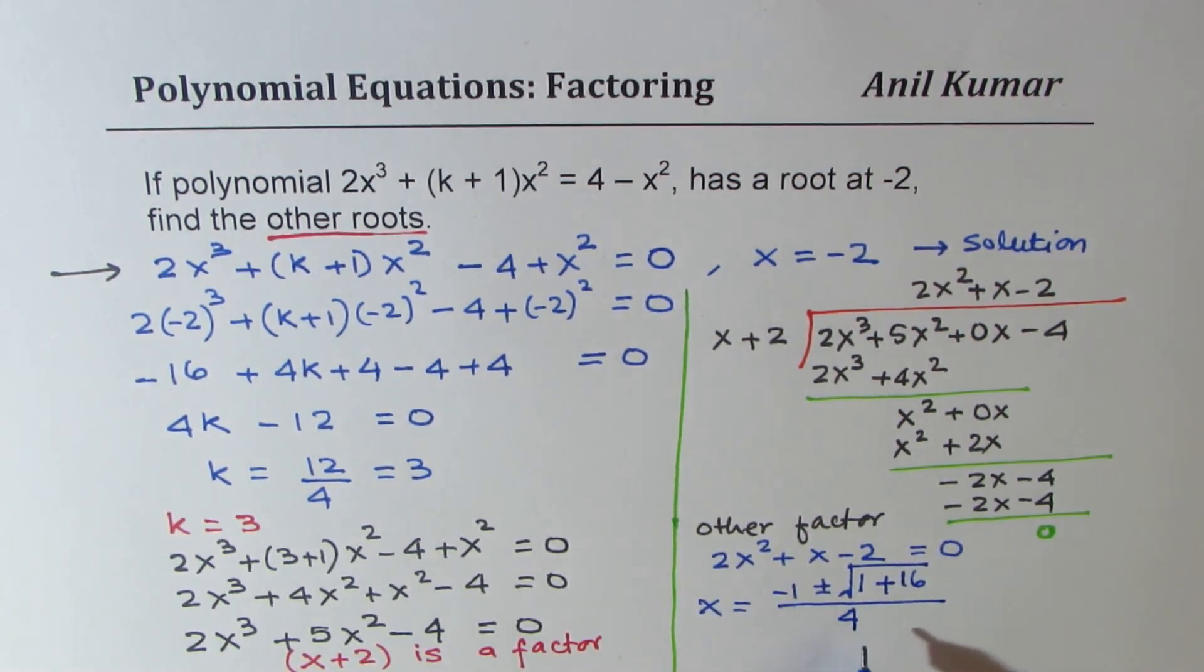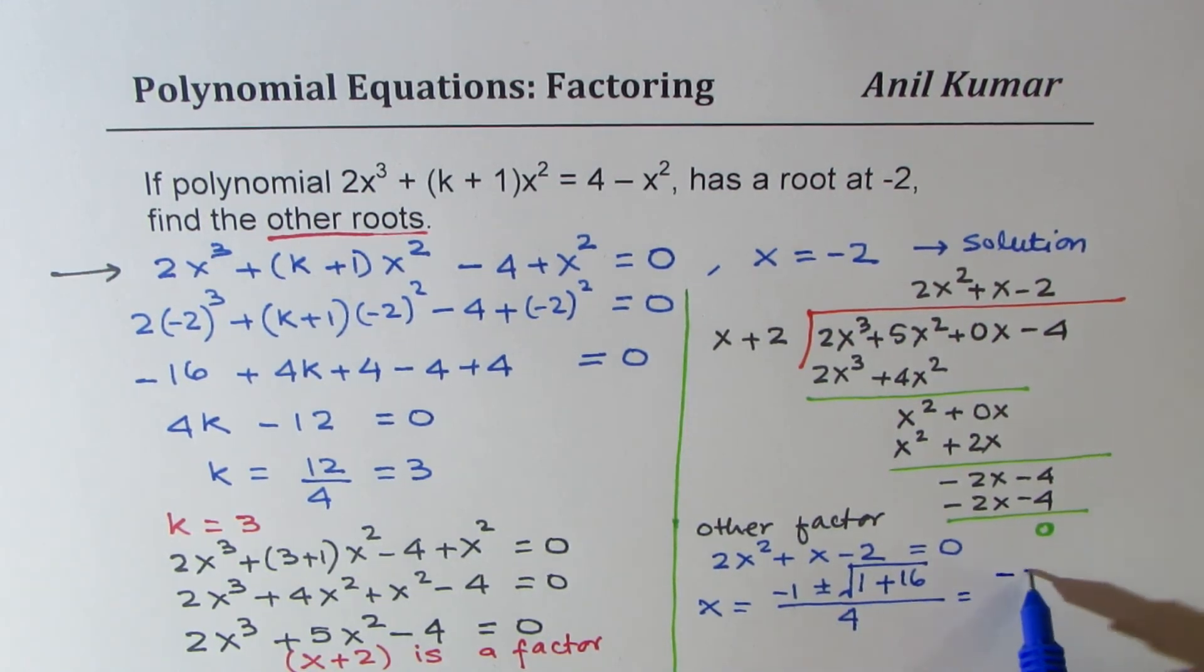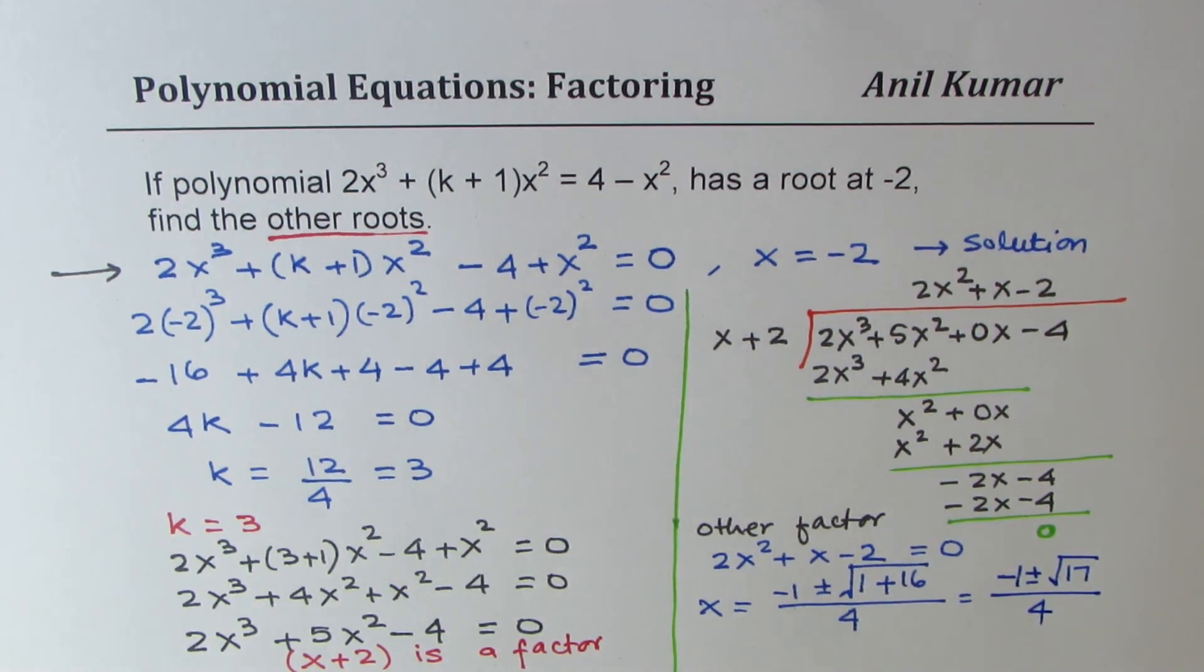I kind of clubbed all the steps here, but I think that is not very difficult. We just use the quadratic formula. So that gives you two roots, which are -1 plus minus square root of 17, divided by 4. So that becomes the other roots.